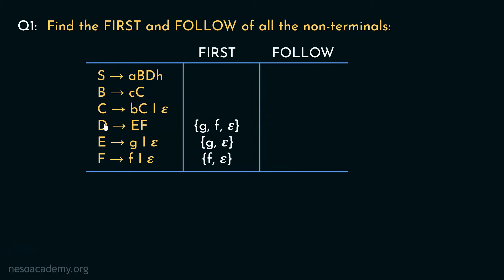Now let's figure out First of C. The production rule is: C can be rewritten as lowercase b followed by uppercase C, or epsilon. Since we have a terminal at the beginning, First of C will include the symbols b and epsilon. For uppercase B, the production rule is B can be rewritten as lowercase c followed by uppercase C. So First of B will have only the symbol lowercase c.